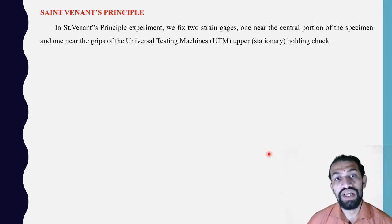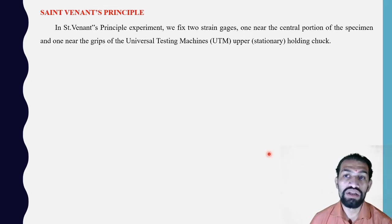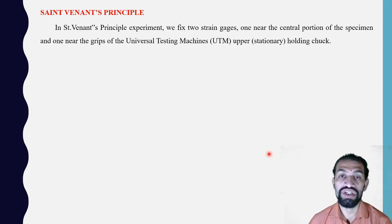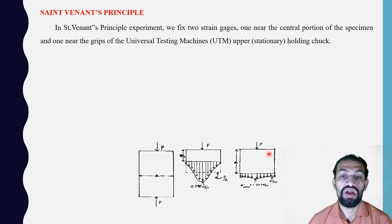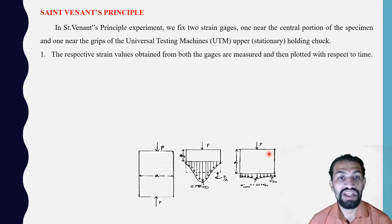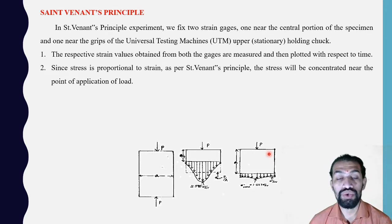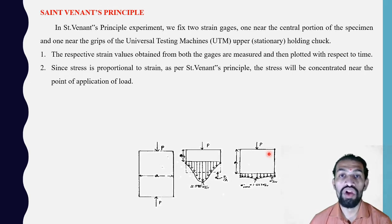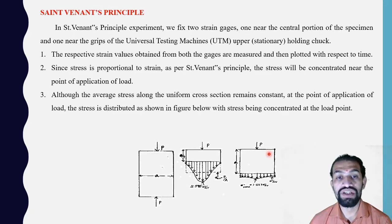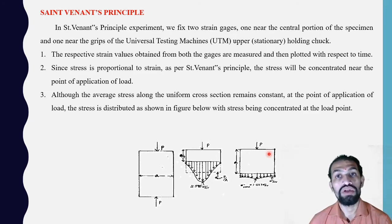In this experiment, we fix two strain gauges — one near the central portion of the specimen and one near the grip of the UTM. We usually do this in the tension test in the laboratory. The strain gauge values obtained from both gauges are measured and plotted with respect to time. Since stress is proportional to strain, as per Saint Venant's Principle, the stress will be concentrated near the point of application of load.